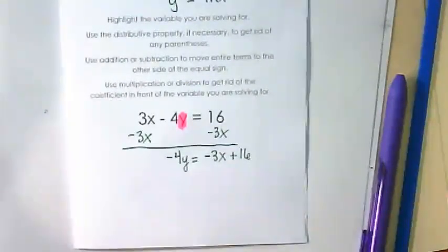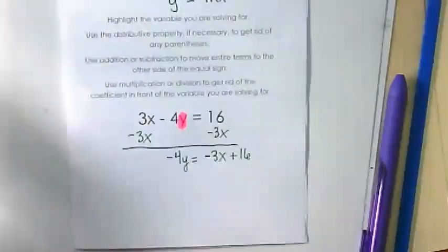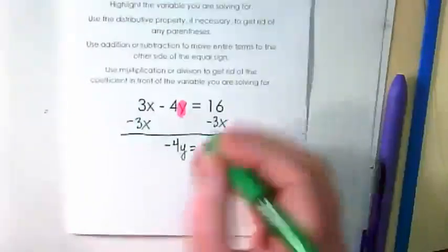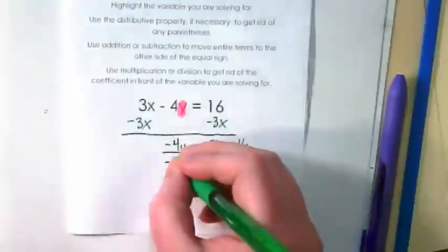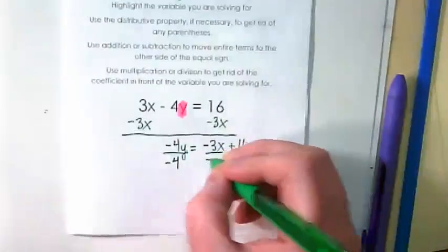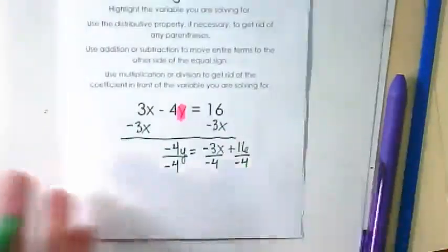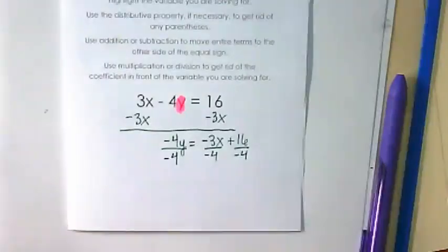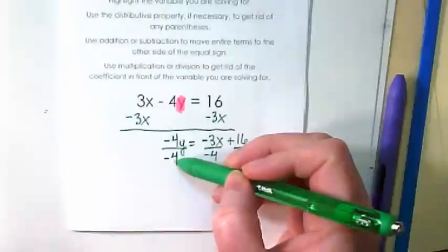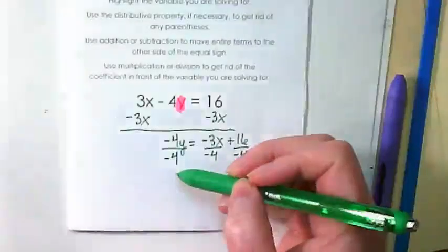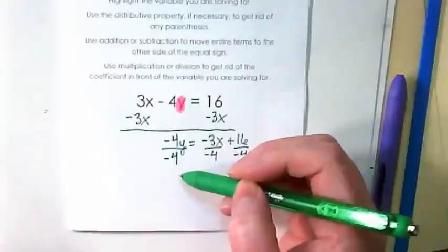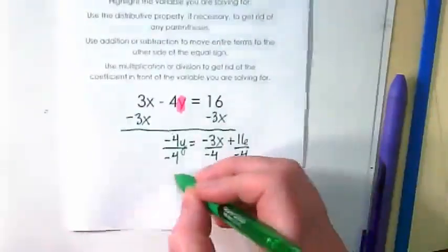Our final step is to use multiplication or division to get rid of the coefficient in front of the variable we are solving for. That is negative 4. So we are going to divide it into all terms on this equation. Negative 4 divided by negative 4 gives us a positive invisible 1. So that leaves us with our Y.